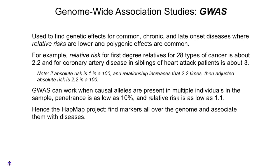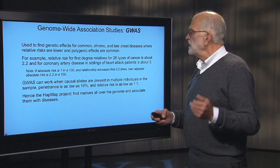Thinking about risk is tricky. Suppose the absolute risk is 1 in 100 and that relationship increases it 2.2 times. Then the adjusted absolute risk is 2.2%, compared to the baseline of 1%. So saying it that way sounds a bit different from saying you are 2.2 times as likely — that framing makes it sound worse.